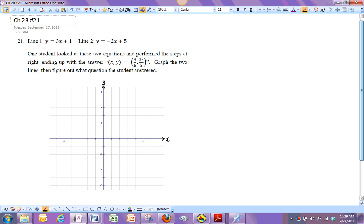So in this problem, some student sees these two equations here and they do some steps with the equations and end up with the answer (4/5, 17/5), which in decimal form is exactly 0.8 and 3.4. Okay, so that's their answer. Now, we don't know what that means yet, and maybe you have a guess, but we're going to figure this out anyway.